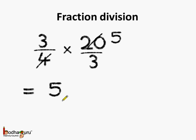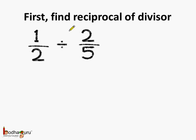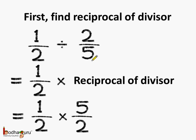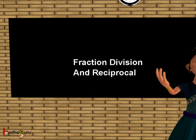That was fraction division. To reiterate: if we need to divide, say, 1 by 2 divided by 2 by 5, first we find the reciprocal of the divisor and multiply the fraction by it. The reciprocal of 2 by 5 is 5 by 2, so we multiply 1 by 2 by 5 by 2. The answer is 1 into 5 by 2 into 2, which equals 5 by 4. Division of fractions is basically multiplying by the reciprocal of the divisor.